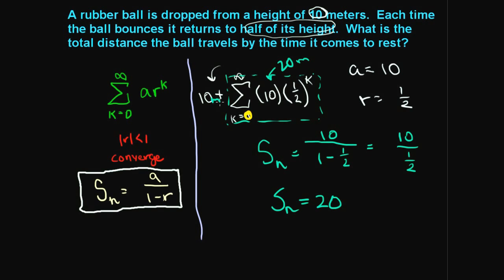And the initial drop was 10 meters. So the total distance the ball travels is the initial 10 meter drop and the 20 meters for all the bouncing, for a total of 30 meters.